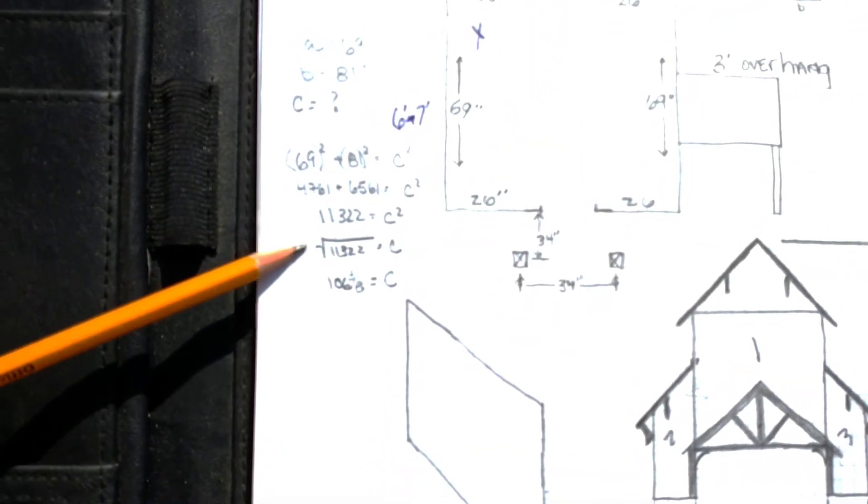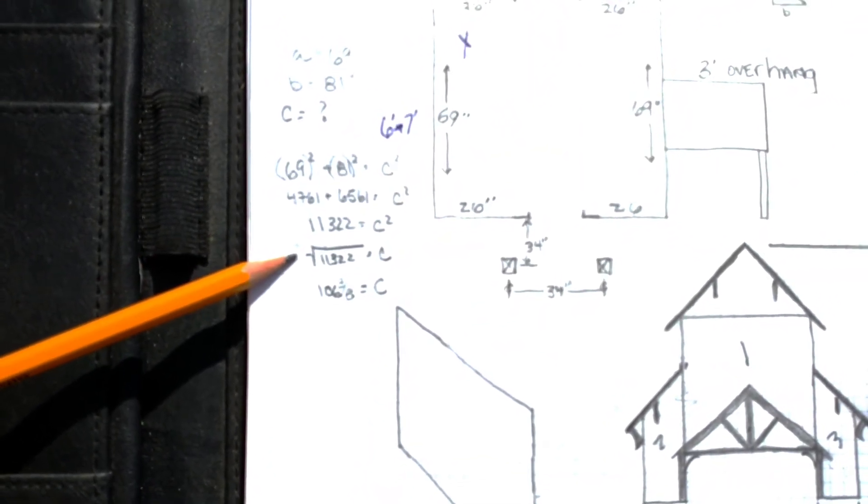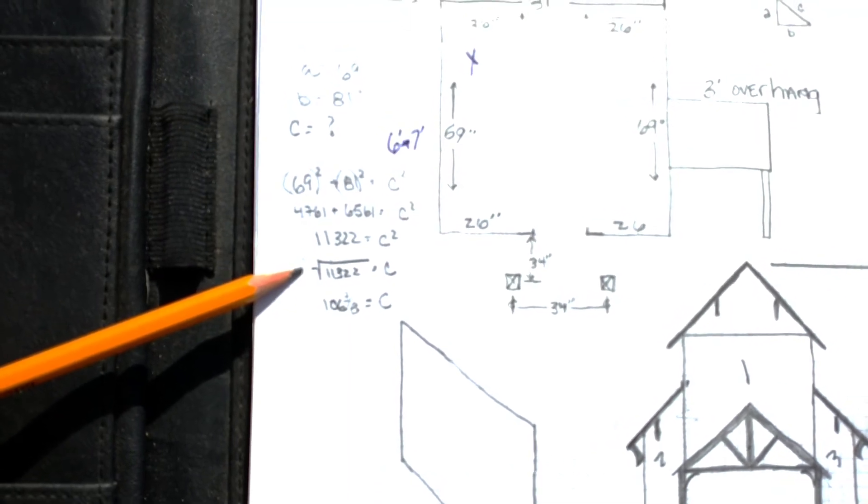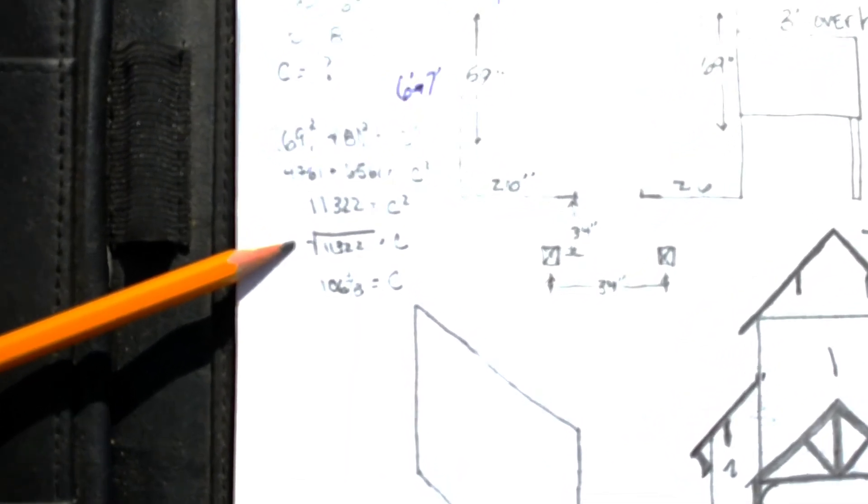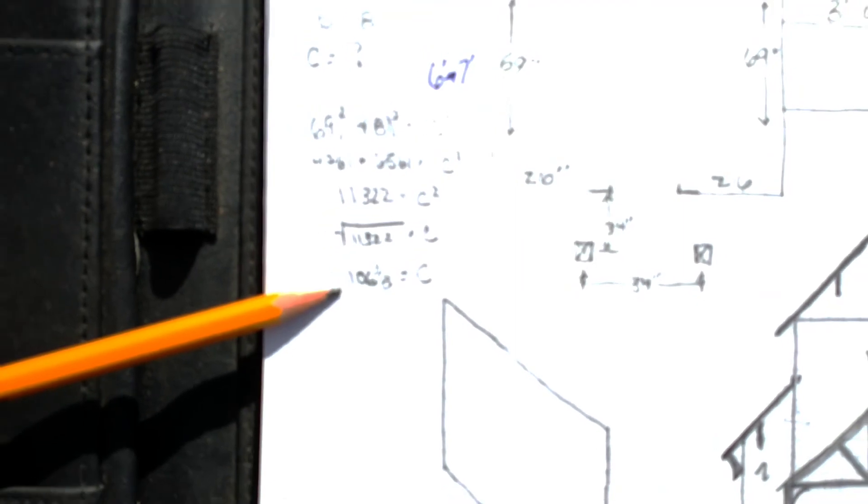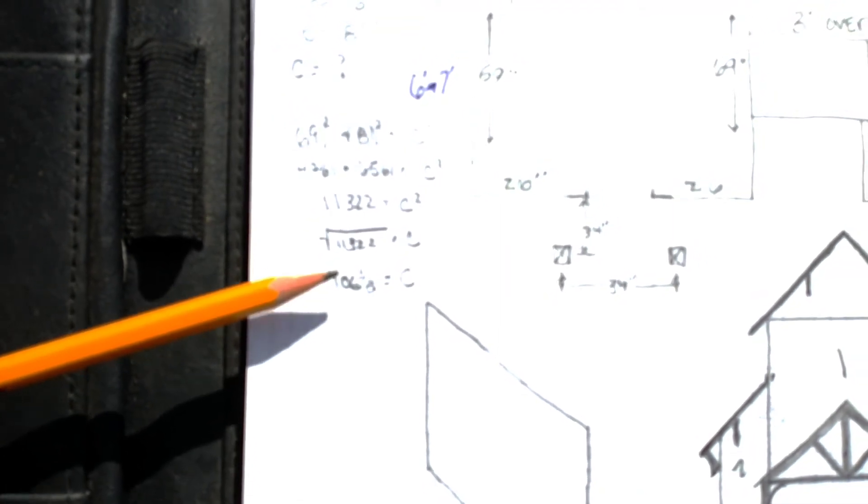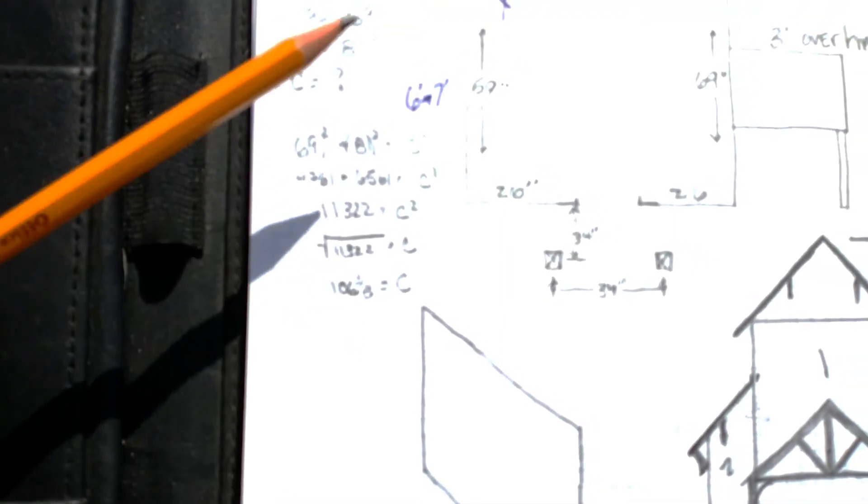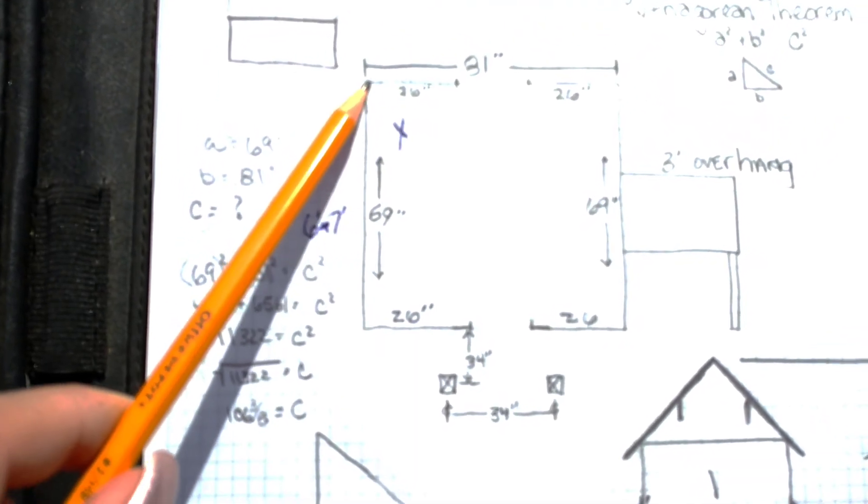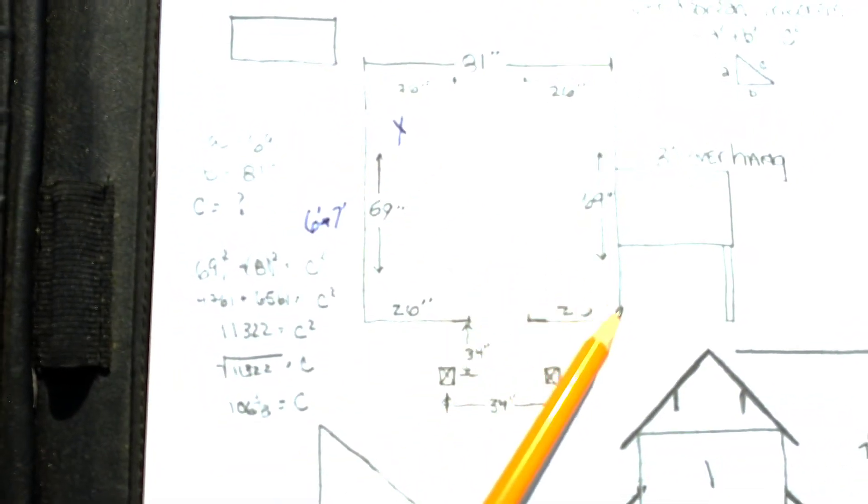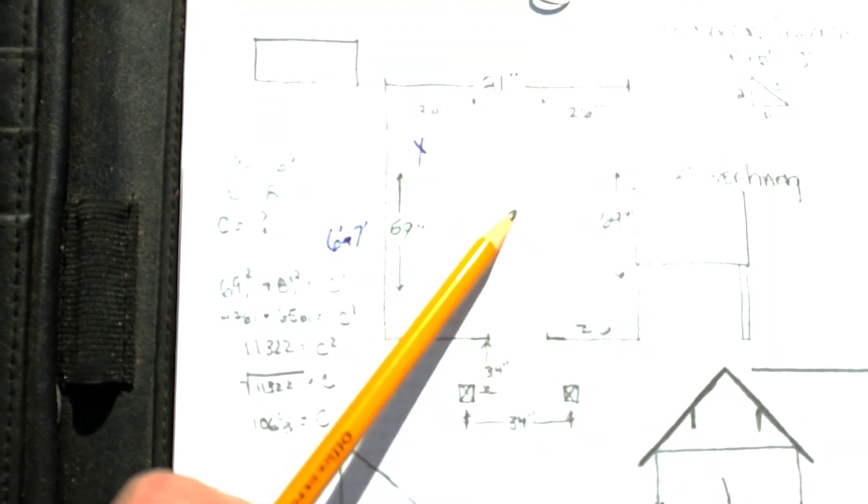Okay, so again, we take that square root of 11,322 inches. And when I do that, I come up with 106 and 3 eighths inch. So that means over here, my hypotenuse is 106 and 3 eighths inches.